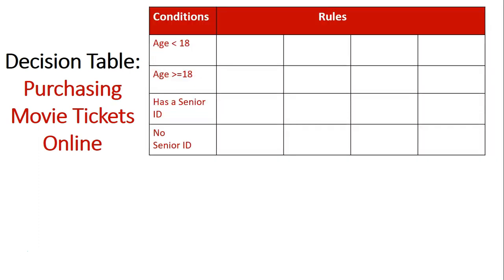Let's start setting up the table. The top part of the table contains conditions — these are the conditions that occur within the system. We've got the conditions as: age being under 18, age being greater than or equal to 18, has a senior ID, or does not have a senior ID.